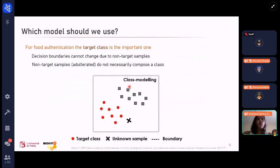For food authentication, the target class is the most important one, which is our control class in this case. We have to guarantee that the decision boundaries of our classification model will not change if we input some classes that were not previously modeled. What we want is classifying the target class.